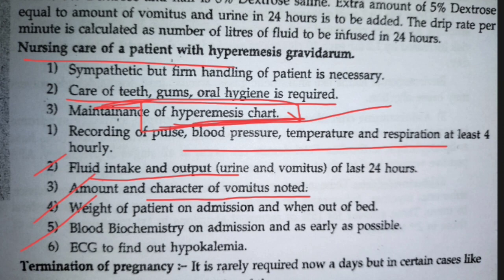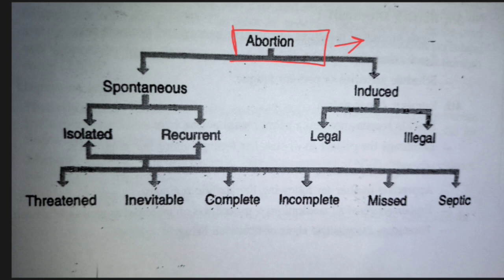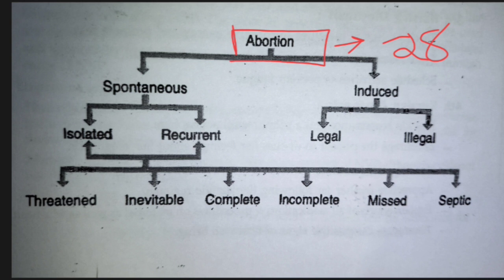Now a very important topic — abortion. Abortion is the premature expulsion of the conception, before the baby grows fully. The baby is expelled from the uterus before proper development. Abortion can be seen within 28 weeks of pregnancy. Abortion can be two types: spontaneous (natural) and induced (man-made). Induced can be legal or illegal.